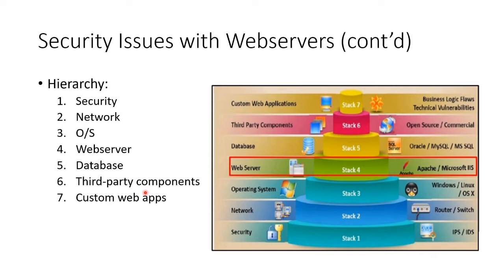Web servers have a hierarchy. You've got web apps and possibly third-party components, and you probably have a database — typically a whole separate server: Oracle, MySQL, MSSQL. Then you've got the web server service itself — Apache, Microsoft — and then the operating system, the box, the network, and any security like intrusion protection and intrusion detection. The web server is just one slice of this big layered cake, but you could attack it at any of these layers.